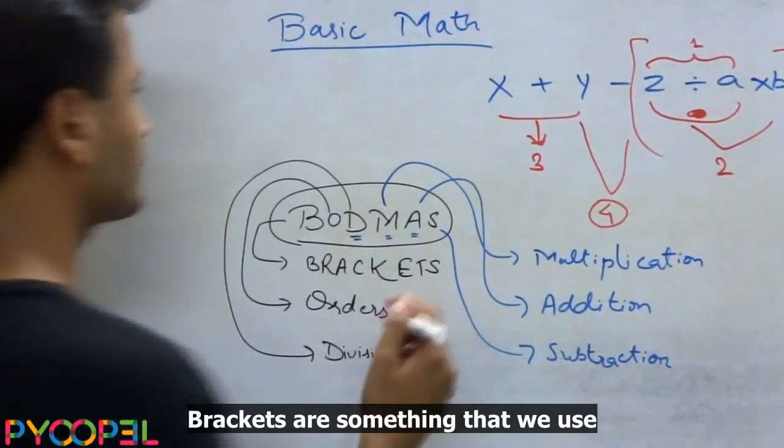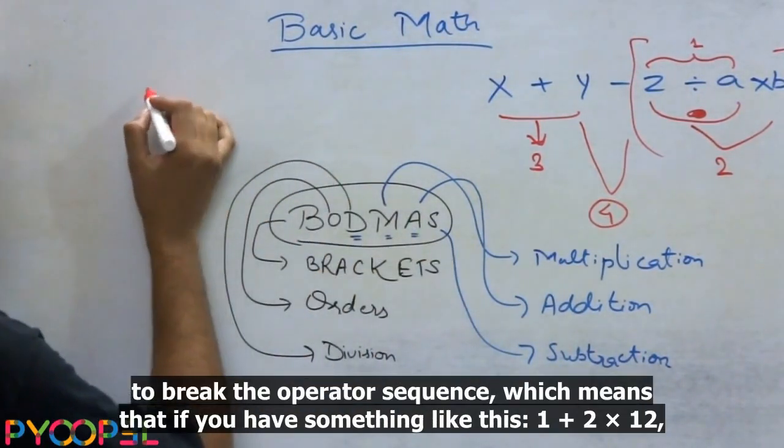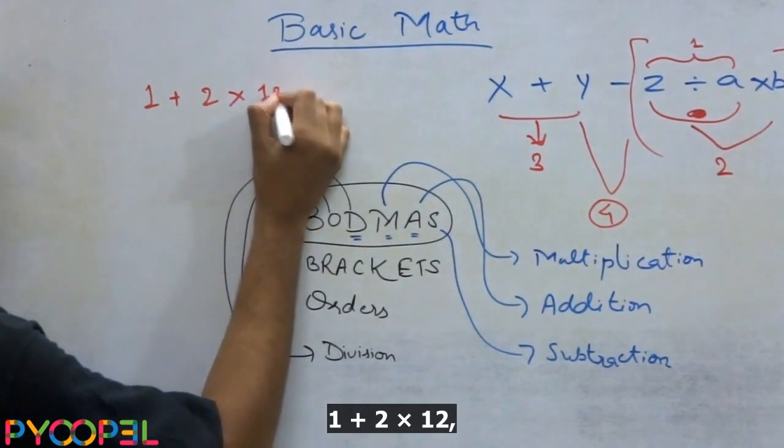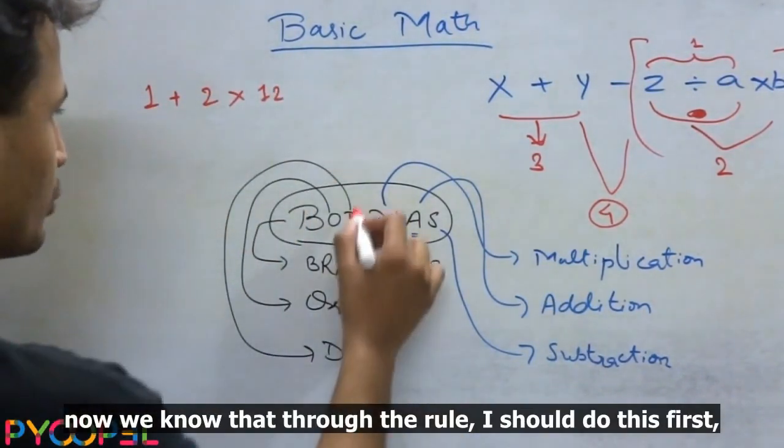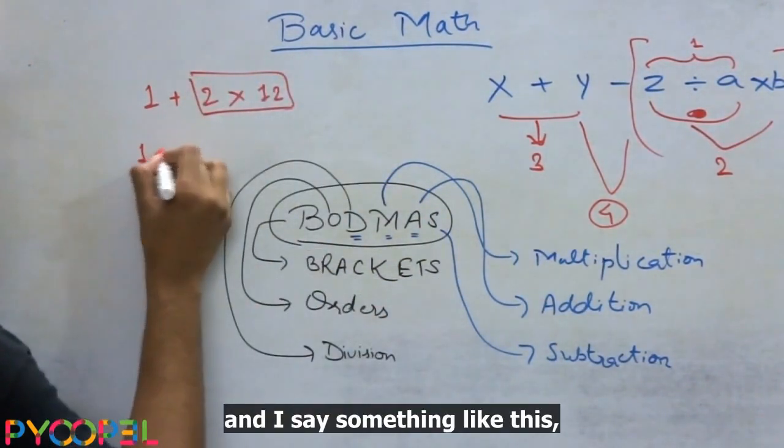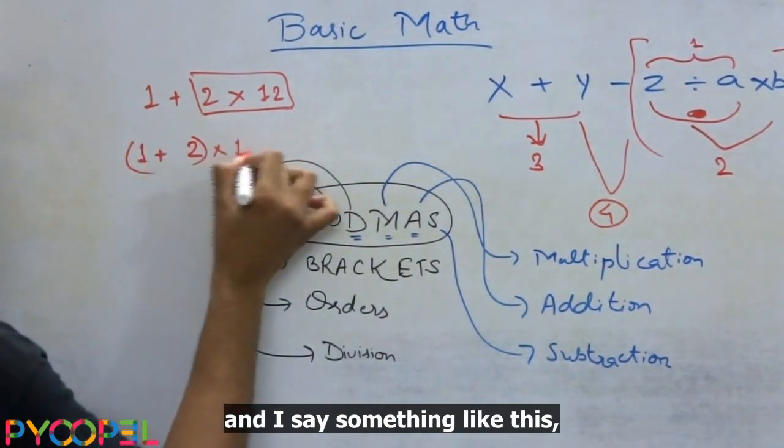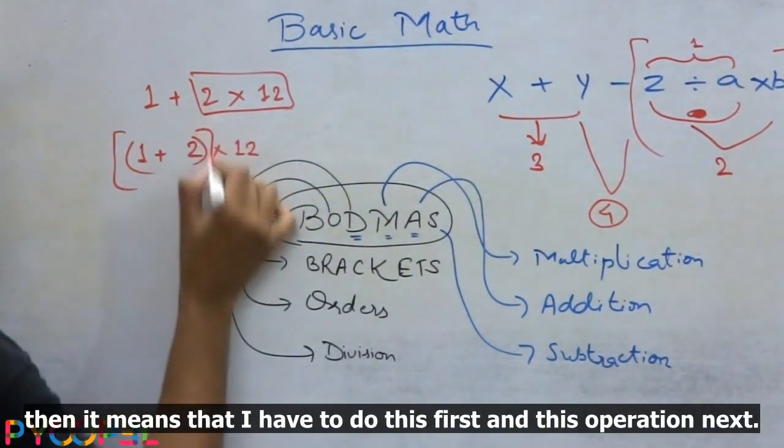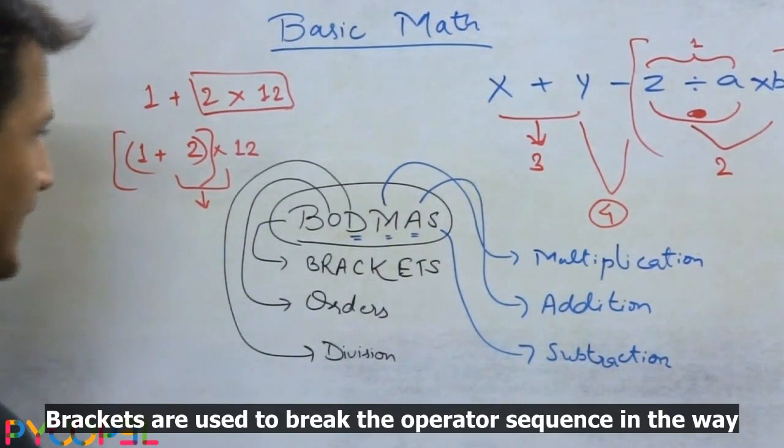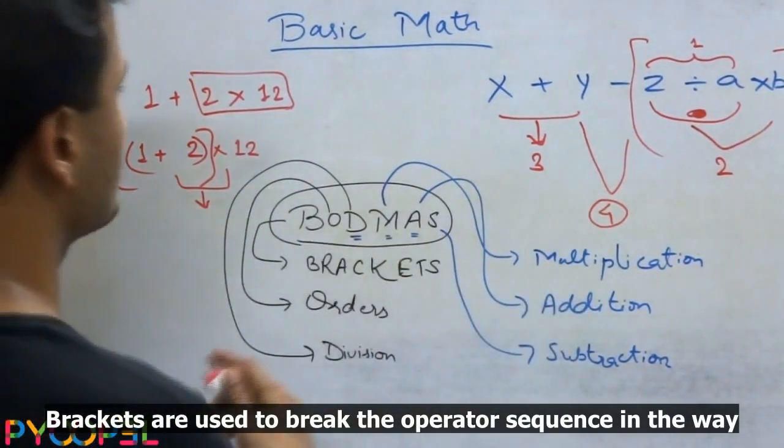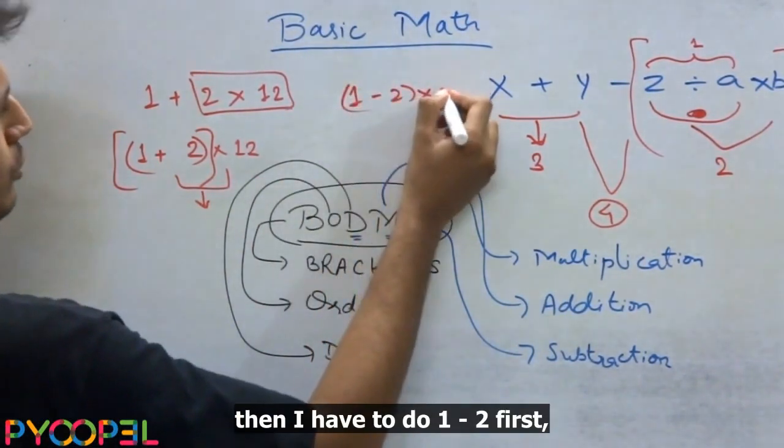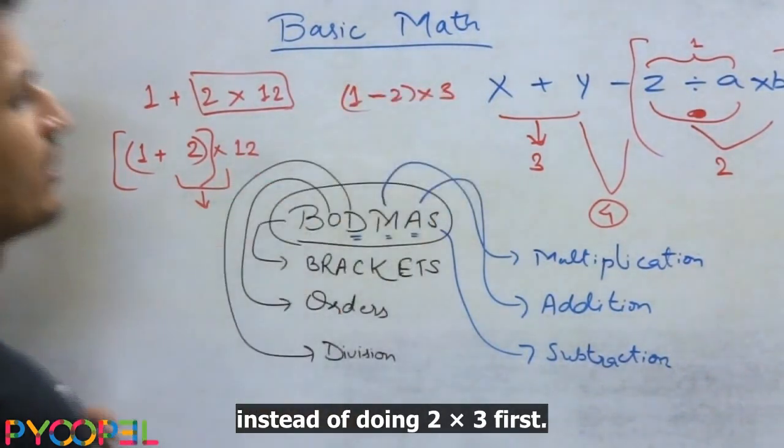Brackets are something that we use to break the operator sequence, which means that if you have something like this, 1 plus 2 into 12. Now we know that through the rule, I should do this first, but if I use brackets and I say something like this, then it means that I have to do this first and this operation next. Brackets are used to break the operator sequence in the way the user wants it. If you say 1 minus 2 into 3, then I have to do 1 minus 2 first instead of doing 2 into 3 first.